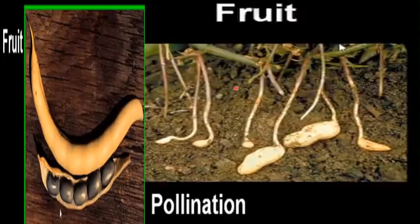Some fruits, for example in groundnut, are geocarpic. Seeds are exalbuminous with two-lobed cotyledons. Pollination is through insects. The standard petal acts as an attracting lobe, the wing petals serve as a platform for the insect, and the keel petals enclose the essential organs. The pollination mechanism is through the piston mechanism.